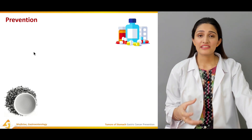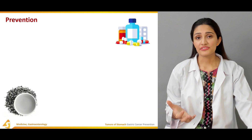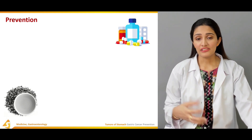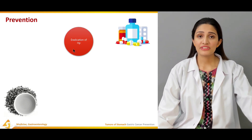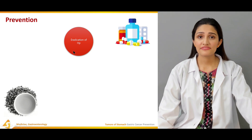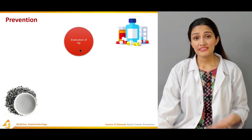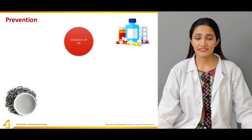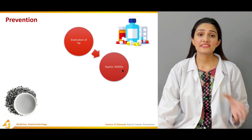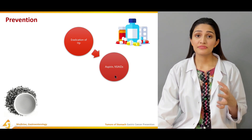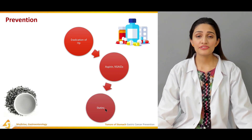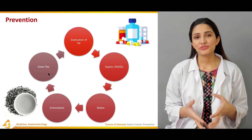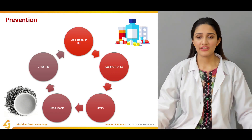Since gastric cancer has a very lethal nature, it is necessary to adopt preventive measures. The eradication of Helicobacter pylori infection is very important — a decline in H. pylori infection has led to a noticed decline in gastric cancer. Aspirin and NSAIDs have a protective role against gastric cancer. Statins, antioxidants, and green tea have also shown beneficial effects on prevention.